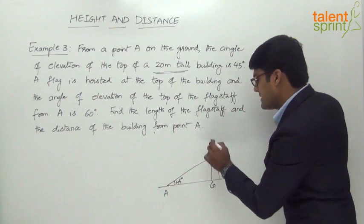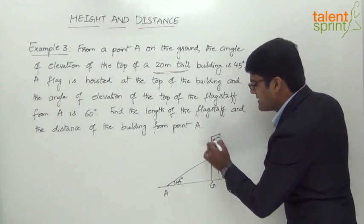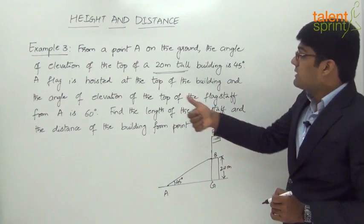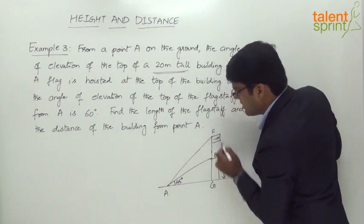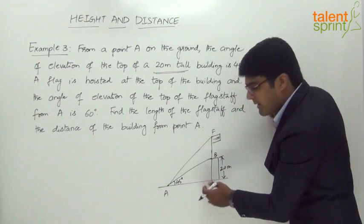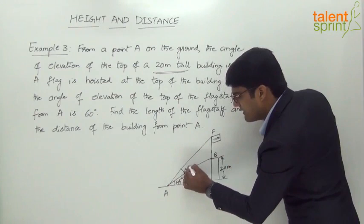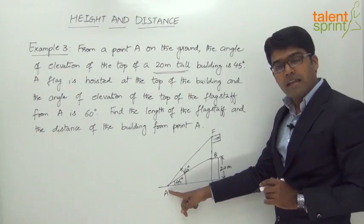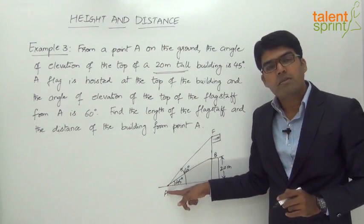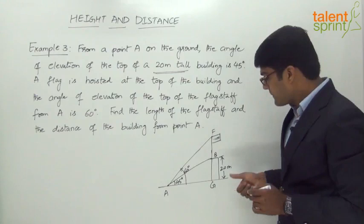On top of the building there is a flag staff. Let the top point of the flag staff be F. The angle of elevation of the top of the flag staff from point A is 60 degrees. Angle of elevation is always measured from the ground — so 60 degrees is the complete angle from the ground to the line of sight AF. There are two lines of sight: A to B at 45 degrees and A to F at 60 degrees.